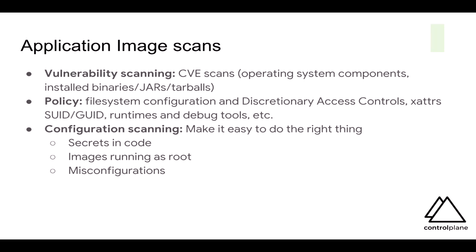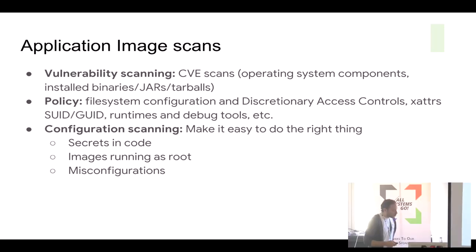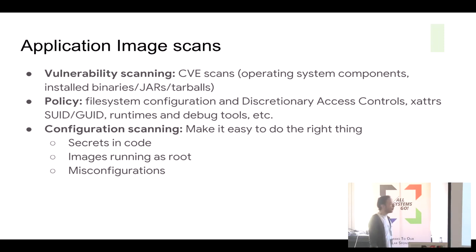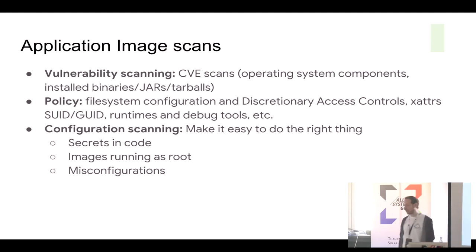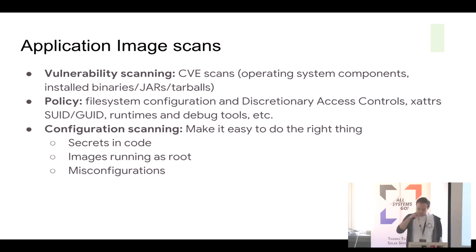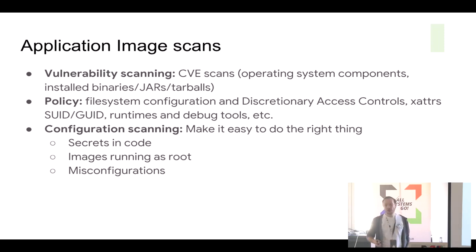We should be ensuring that we're not shipping CVEs to production. This is for operating system components, installed binaries and jars, tarballs, and in some cases many more things. Policy — we care about discretionary access controls. There's no point shipping very secure images if we use setGUID or setUID on binaries, because that is a classic old-school path to privilege escalation. And of course, secrets and configuration scanning — we should not be shipping any secrets in code. Everything should be immutable and open to scrutiny.